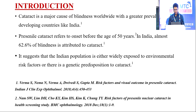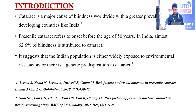Introduction. Cataract is a major cause of blindness worldwide with greater prevalence in developing countries like India. Pre-senile cataract refers to onset before the age of 50 years. In India, almost 60% of blindness is attributed to cataract. This suggests that the Indian population is either widely exposed to environmental risk factors or there is a genetic predisposition to cataract.